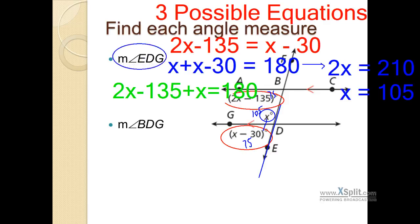So if we were asked for angle EDG, for example, E to D to G, that's this angle down here, is 75. And BDG, this angle over BDG, this angle right here, x, is going to be 105.